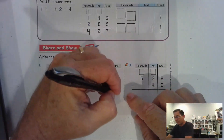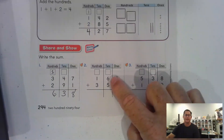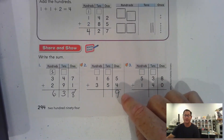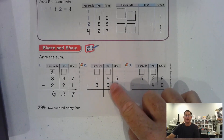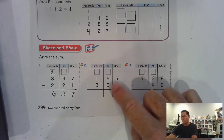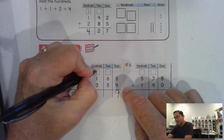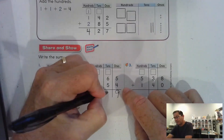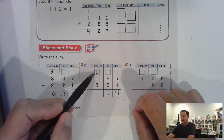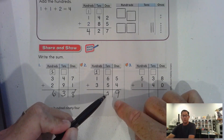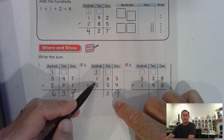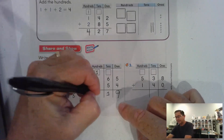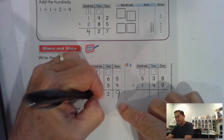Add the hundreds: three, four, five, six — six hundred thirty-eight. Number two: add the ones, five and four is nine. Now the tens — six and five is eleven, we will have to regroup that as one hundred and one ten. Three hundred plus two more hundreds is five hundred.